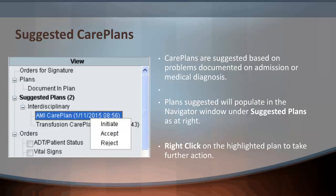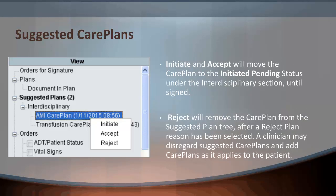Suggested care plans are care plans suggested based upon problems or diagnoses documented on an admission. Plans suggested will populate in the navigator window under Suggested Plans. Right-click on the highlighted plan to take further action. The Initiate and Accept buttons will move the care plan to the Initiated Pending status under the interdisciplinary section until they are signed off or saved. Reject will remove the care plan from the suggested plan tree after a reject plan reason has been selected. A clinician may disregard any suggested care plans and add care plans as applicable to the patient.